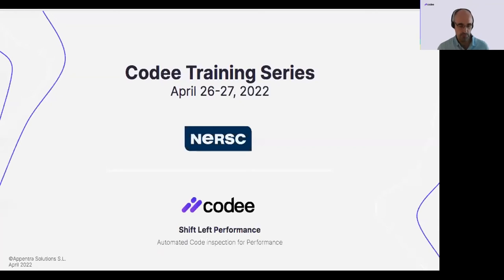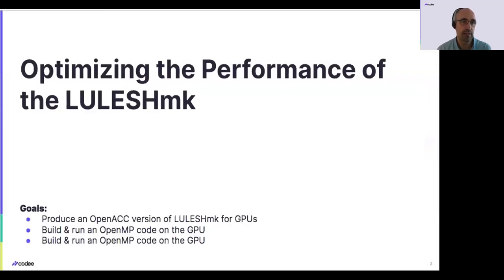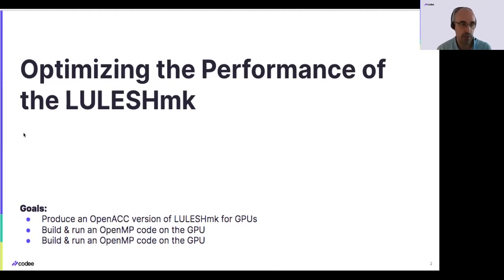Finally, in order to try to have a first sense of the complexity of real applications, we have selected the LULESH example. We propose to produce the OpenACC version because we have seen that OpenACC typically produces a bit faster code than OpenMP for the same purpose. So to simplify, let's use OpenACC as a reference for this more realistic code example.